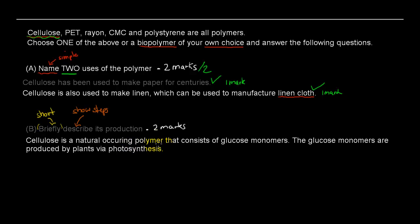Cellulose is a naturally occurring polymer that consists of glucose monomers. This part is important — we've named the monomer. Remember, cellulose is a polymer, which means it's made up of many monomers. The glucose monomers are produced by plants via photosynthesis, so glucose itself occurs naturally. That would be our first mark — we've described the monomer, what it is, and how it is produced.